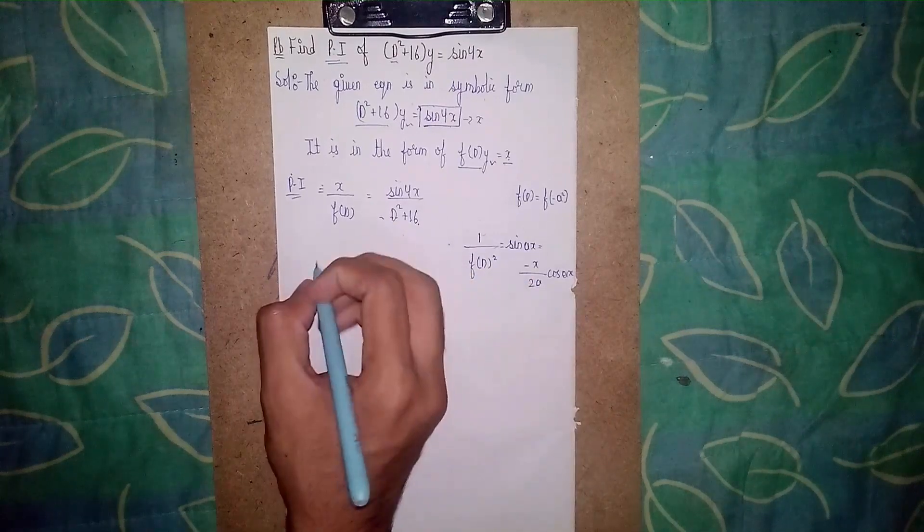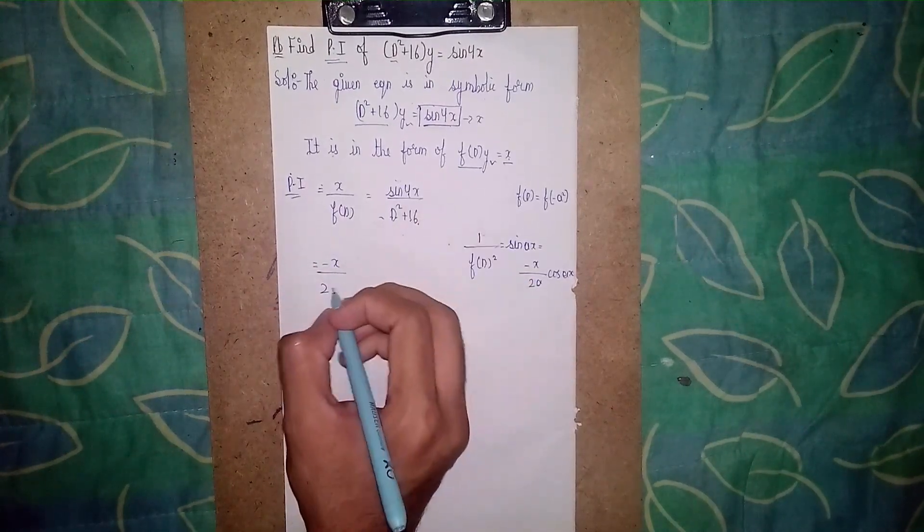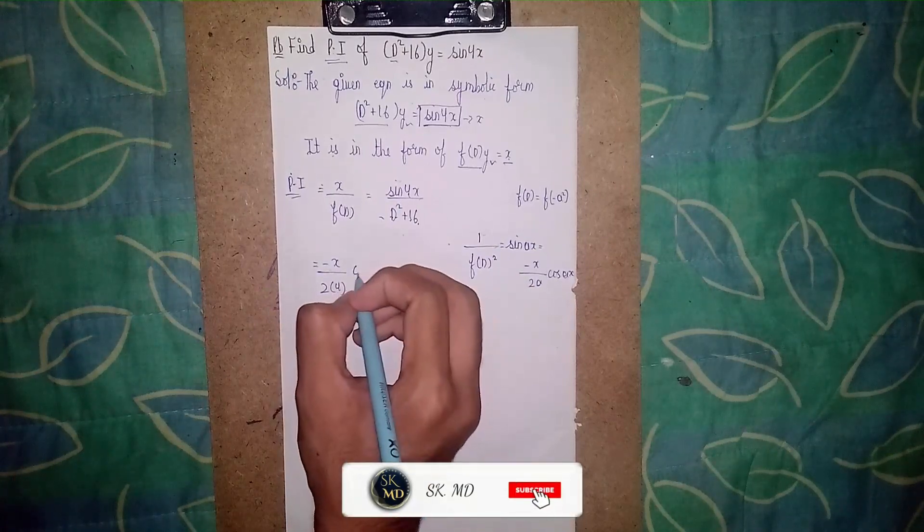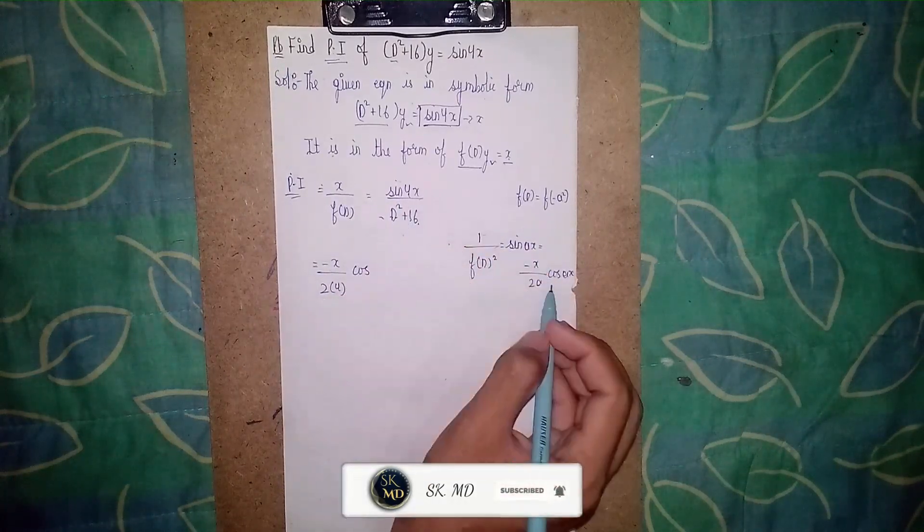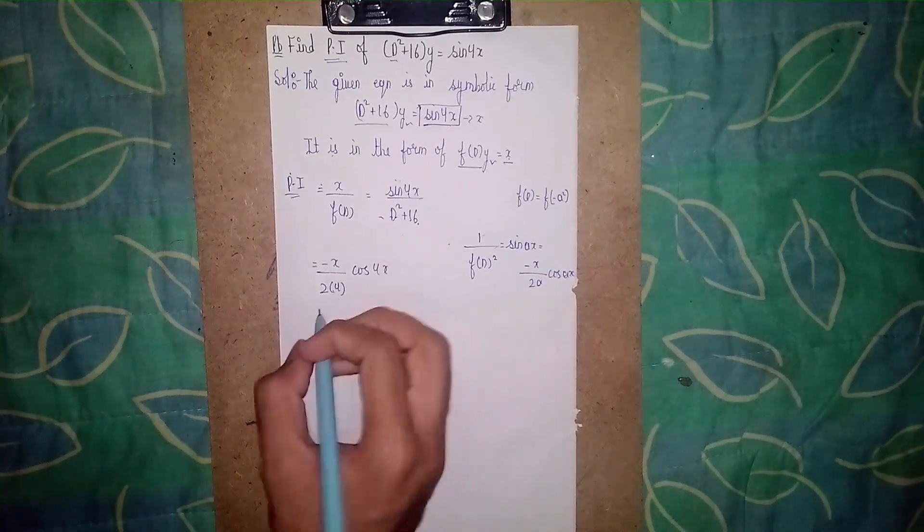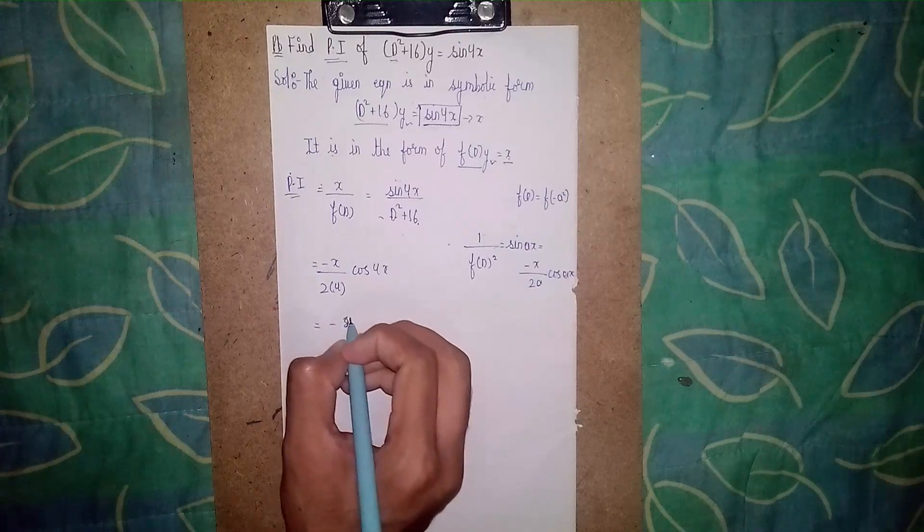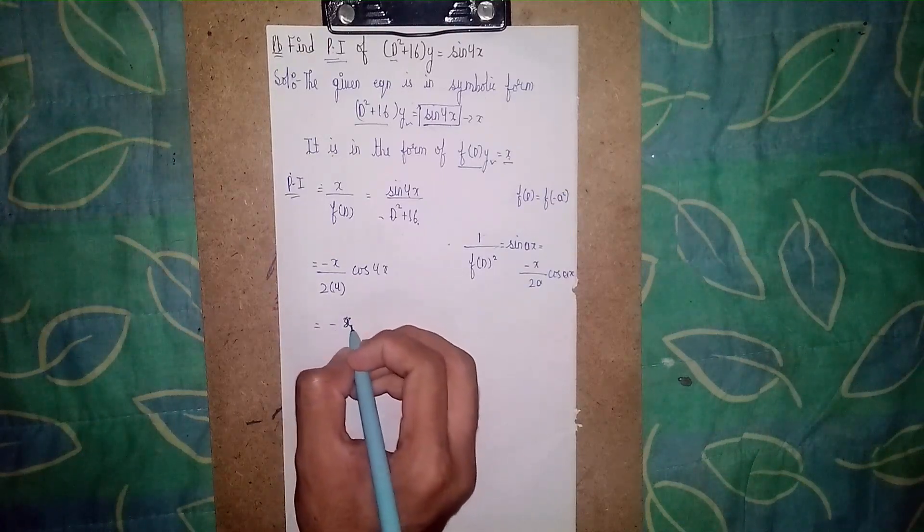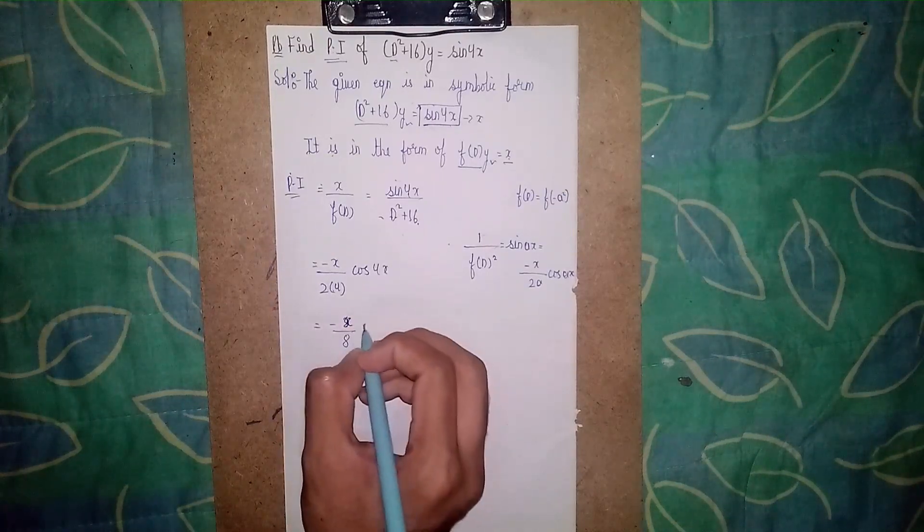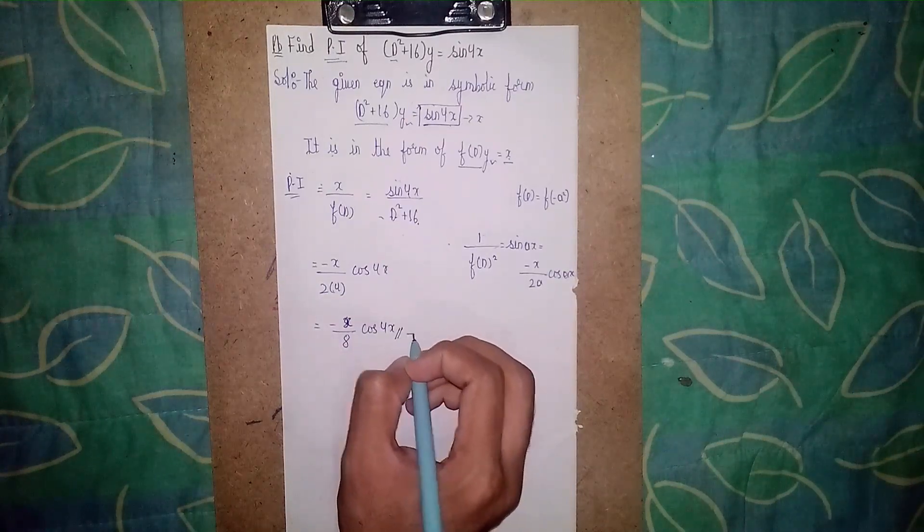Next you go to this formula: -x/(2 × a). What is a? a is 4. So -x/(2 × 4) × cos(4x). Now 2 × 4 is 8, so -x/8 cos(4x). This is our particular integral.